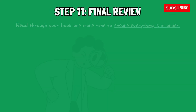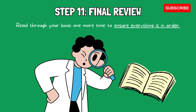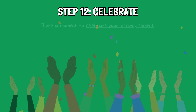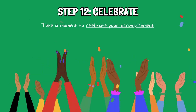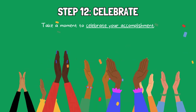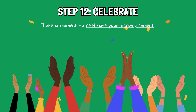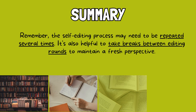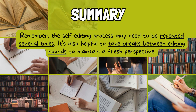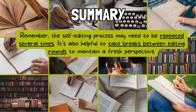Step 11: Final review. Read through your book one more time to ensure everything is in order. Make a final check for any overlooked issues. Step 12: Celebrate. Once you've completed the editing process, take a moment to celebrate your accomplishment. Writing and editing a book is a significant achievement. Remember, the self-editing process may need to be repeated several times. It's also helpful to take breaks between editing rounds to maintain a fresh perspective. Don't rush the process, and be patient with yourself as you refine your work.